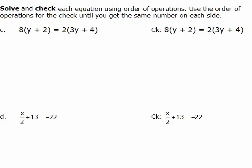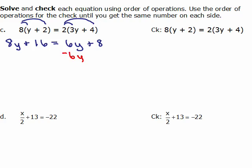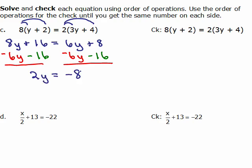Next one. We need to do the distributive property on both sides, so we've got 8y plus 16 equals 6y plus 8 — distributing the 8 on the left and distributing the 2 on the right. Now I have to get the variables on one side, so I'm going to subtract 6y from both sides, and also subtract 16 from the left-hand side, so that I just have 2y on the left. So 2y equals negative 8, and dividing by the coefficient 2 gives y equals negative 4.